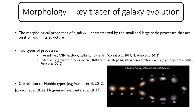Before I start, a brief introduction on why morphology is an important way of looking at galaxy evolution. Morphology is a key tracer of galaxy evolution — it is characterized by the small and large-scale processes that act on or within a galaxy's structure. These processes are of two types: internal, such as stellar feedback, bars, or spiral dynamics; or external, such as merger events, ram pressure stripping, and different types of gas depletion or accretion events. There are many studies in the literature pointing to a strong correlation between these processes and galaxy morphology.